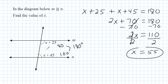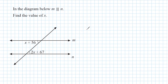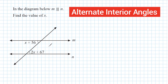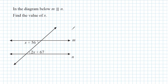Let's go ahead and do another example. In this problem, each expression is located in between the parallel lines, so we are dealing with interior angles. However, they are both on opposite sides of our transversal, so we call these alternate interior angles. What we know about alternate interior angles is that they are congruent to each other. Because they are equal, we can say that 2x plus 67 is equal to x plus 56.